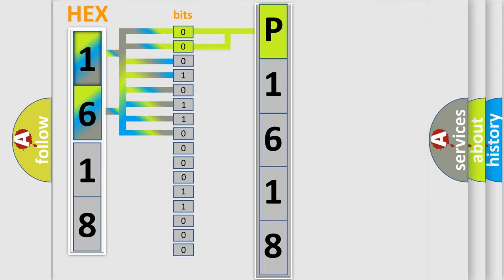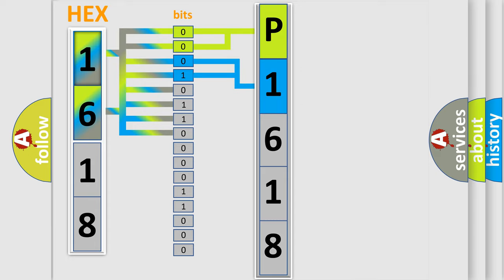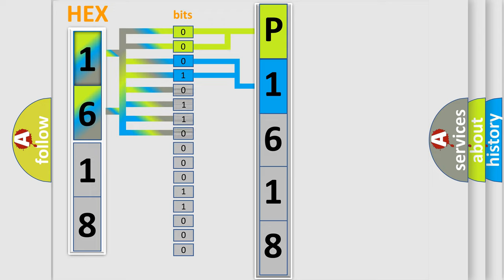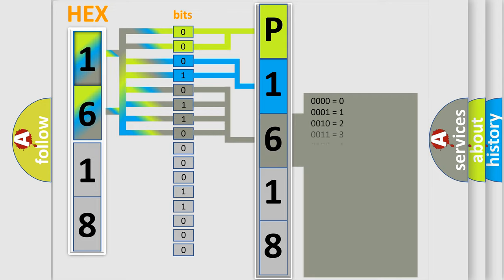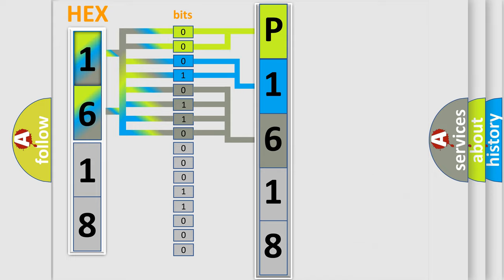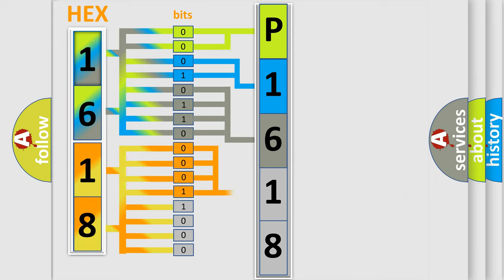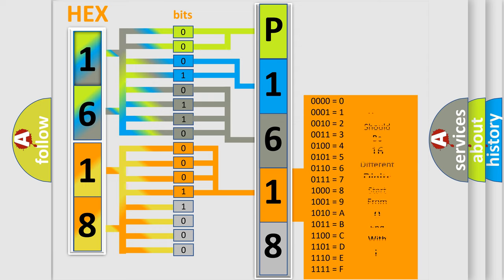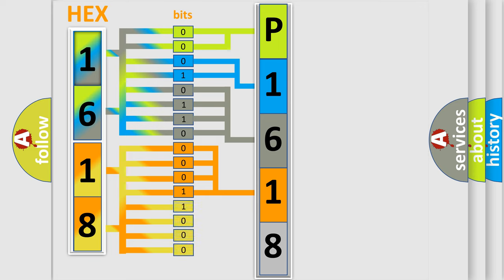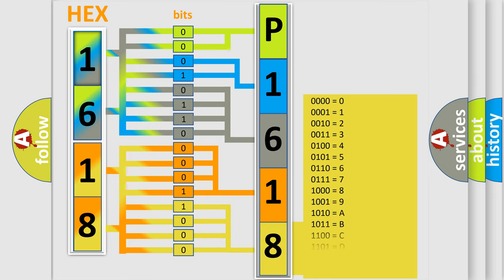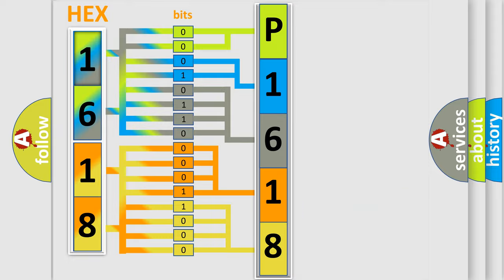The next two bits again determine the second character. The last bits of the first byte define the third character of the code. The second byte is composed of a combination of eight bits. The first four bits determine the fourth character of the code, and the combination of the last four bits defines the fifth character. A single byte conceals 256 possible combinations. We now know in what way the diagnostic tool translates the received information into a more comprehensible format.